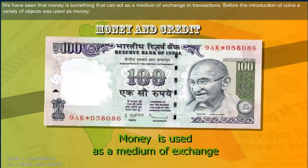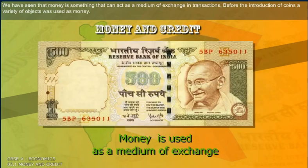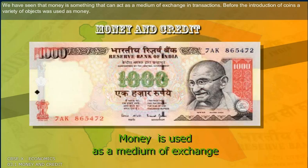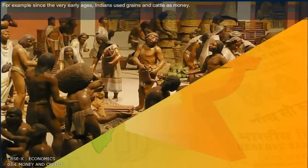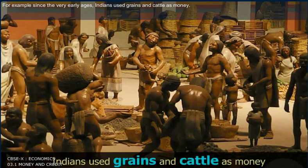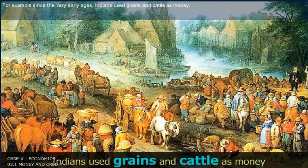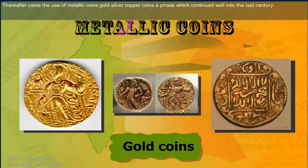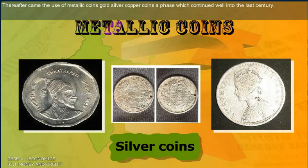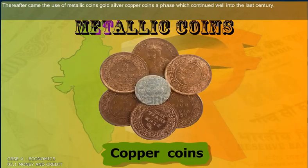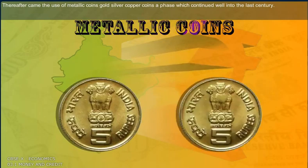Before the introduction of coins, a variety of objects was used as money. For example, since the very early ages, Indians used grains and cattle as a medium of exchange. Thereafter came the use of metallic coins — gold, silver, and copper — a phase which continued well into the last century.